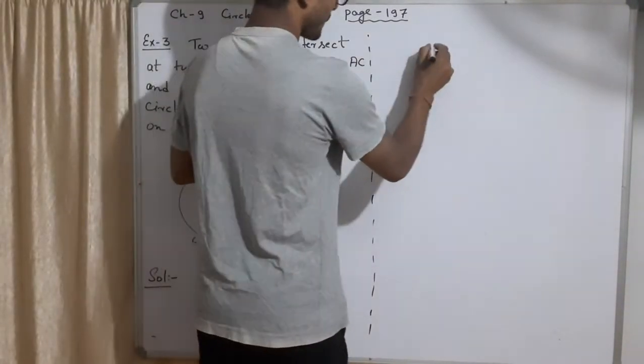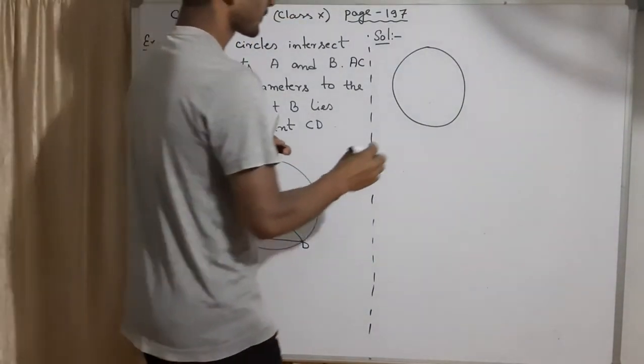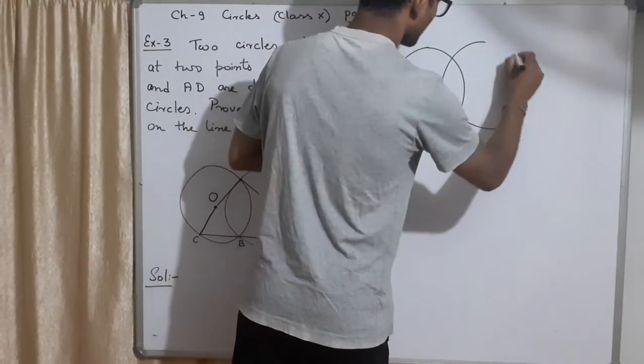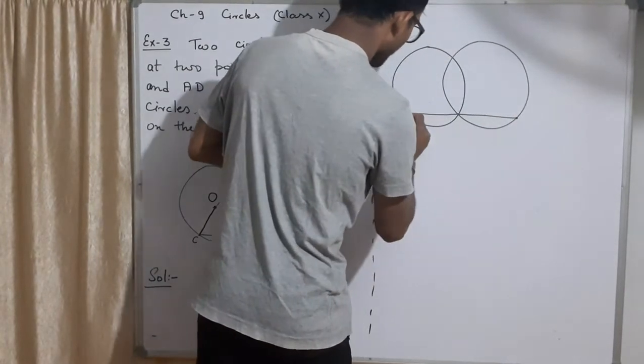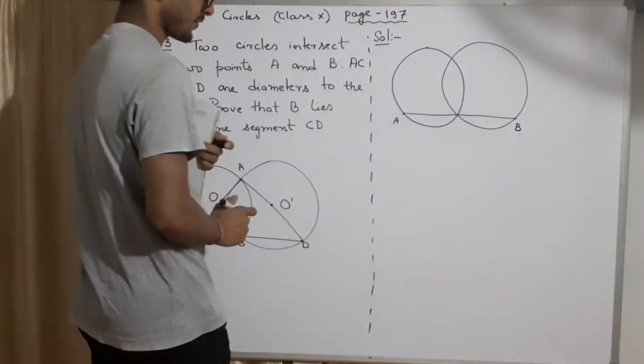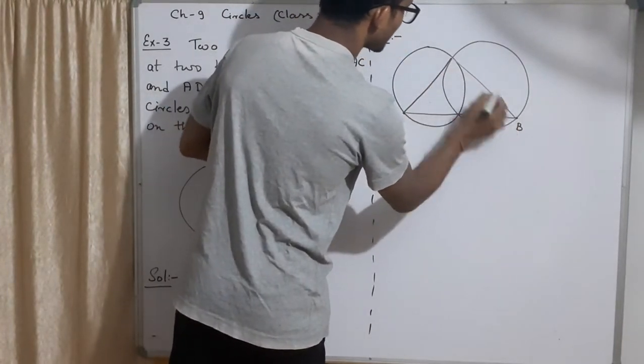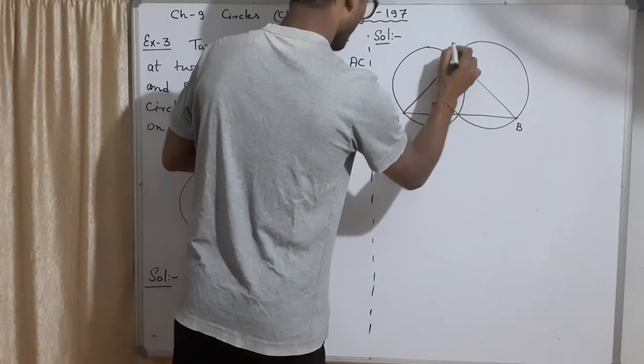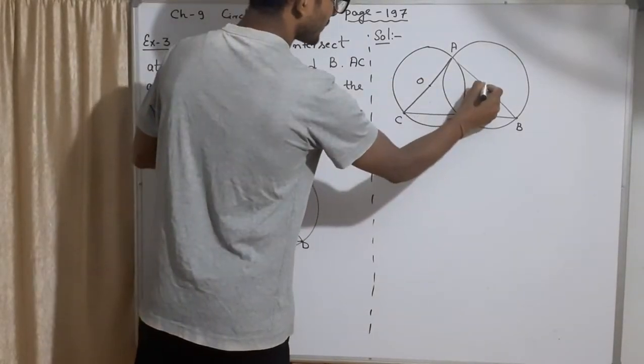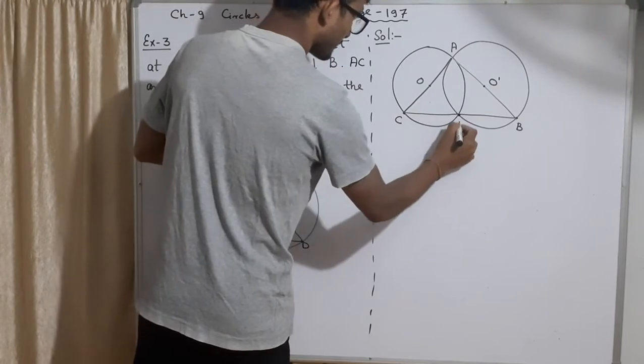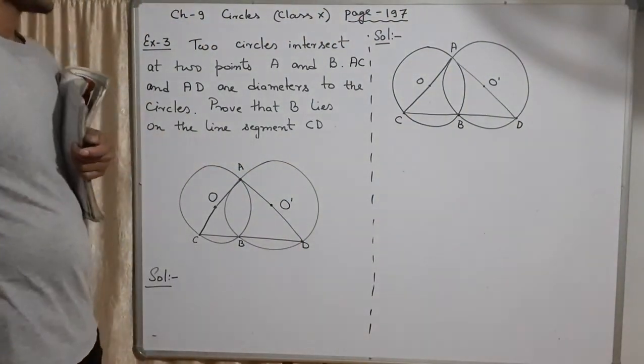So while solving, you will draw the diagram once again. The diagram was somewhat like this. I am redoing this because this is a question diagram. I am not touching that. This is just the diameter. This is A. This is C. I am looking at the diagram. This is O. This is O'. B. This is D. Suppose this is the way we start.